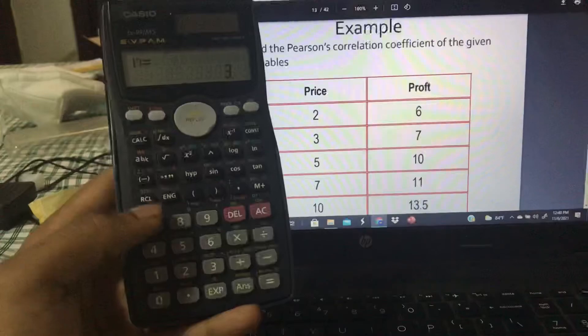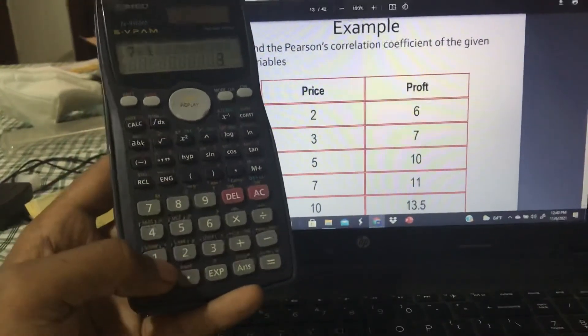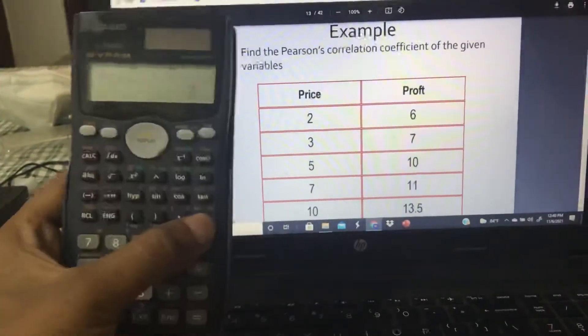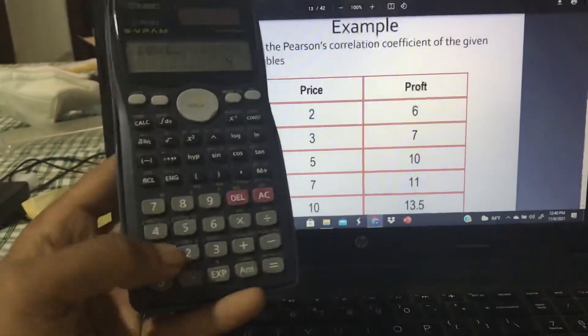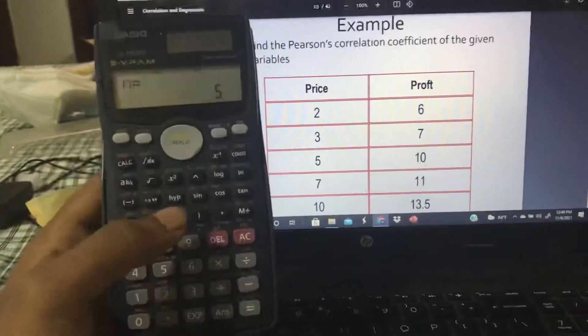Price 7, comma, profit 11, M plus. Price 10, comma, profit 13.5, M plus.